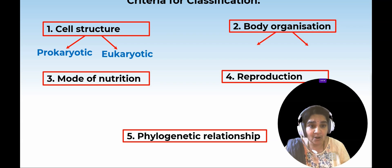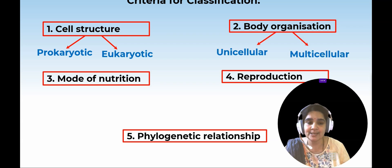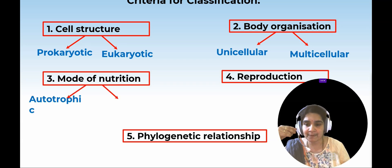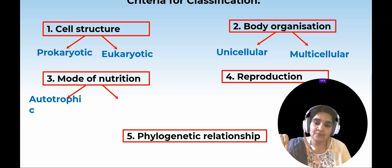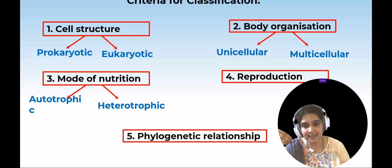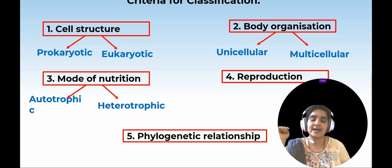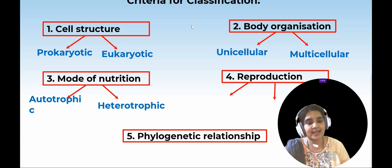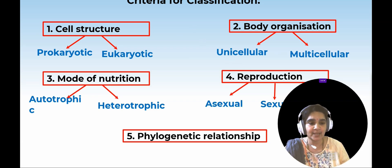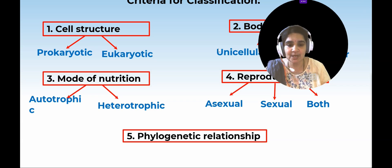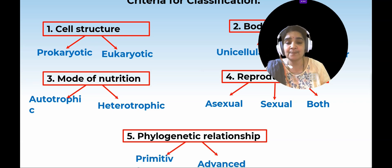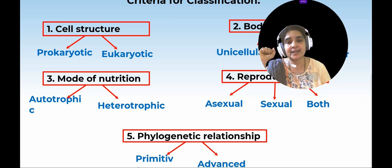Based on body organization, organisms are classified into unicellular and multicellular. Based on mode of nutrition — how they prepare their own food — if they can prepare their own food they are autotrophs; if they depend on other organisms for food they are heterotrophs. Based on reproduction, organisms are classified into asexual, sexual, or both. Based on phylogenetic relationship, they are classified into primitive and advanced types.